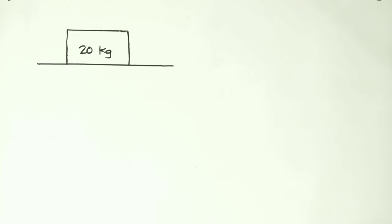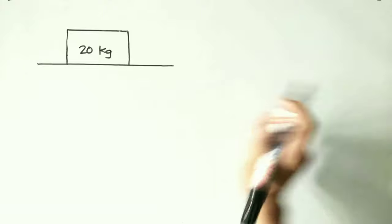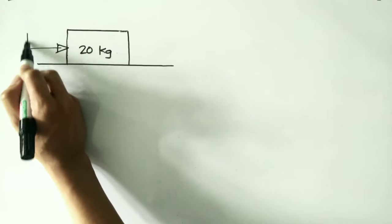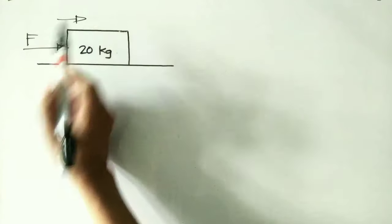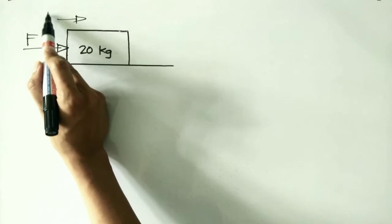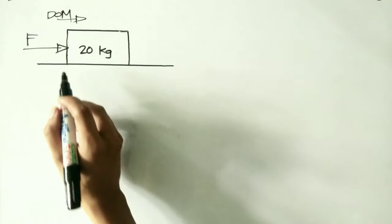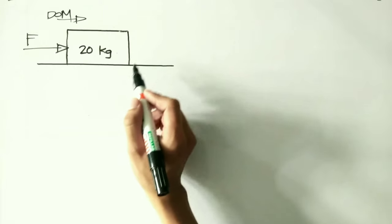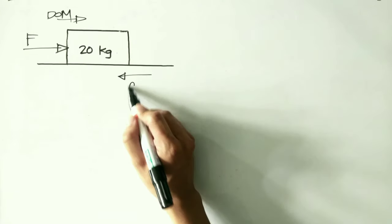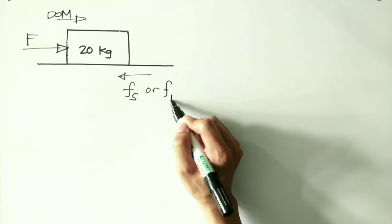We have here a block that is 25 kilograms in mass, and it is over a plane surface. Now let's say that there would be an applied force F that would act on the block going to the right. So naturally, this is the direction of your motion. But we know that there is friction acting on the surface of contact, so that would be either the static frictional force or kinetic frictional force.